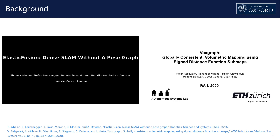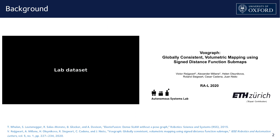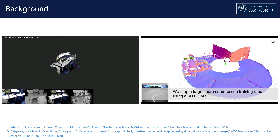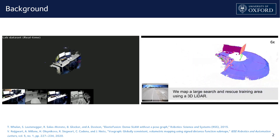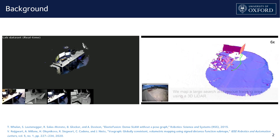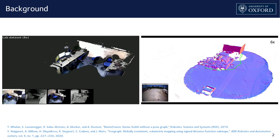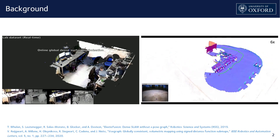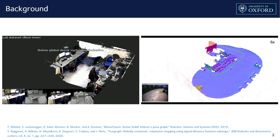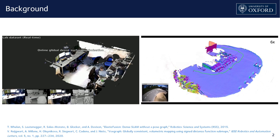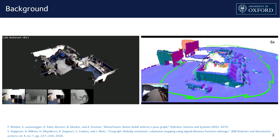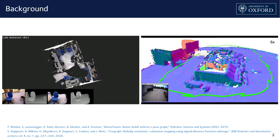3D reconstruction is an active research area because it is interesting for many robotics applications. Systems such as Elastic Fusion can create very accurate and highly detailed reconstructions. It uses RGBD cameras, which have a sensing range around 3 to 4 meters. Hence, it is more suitable for small indoor environments. It also uses a GPU to achieve high scan integration speed.